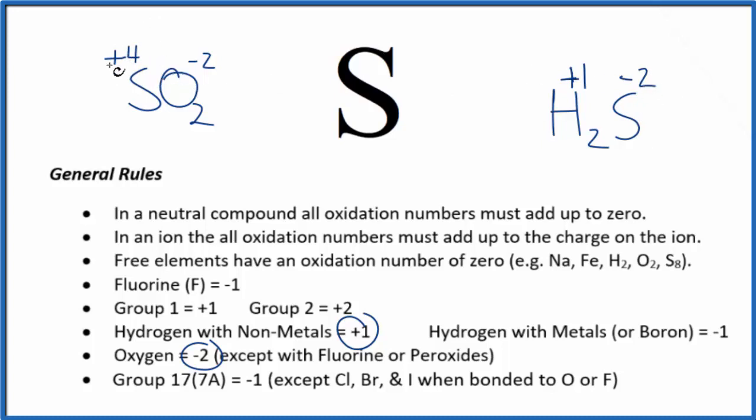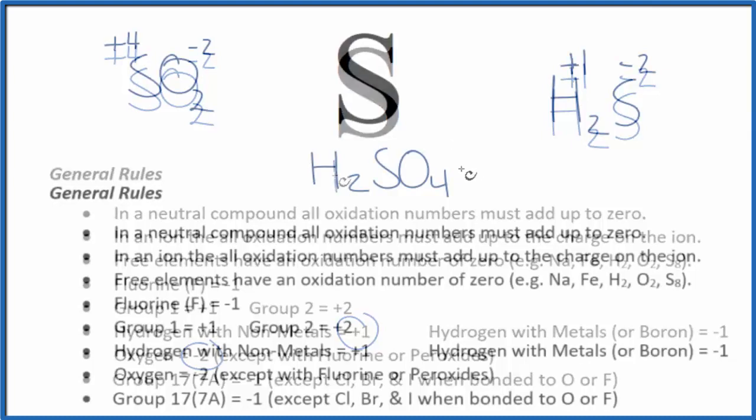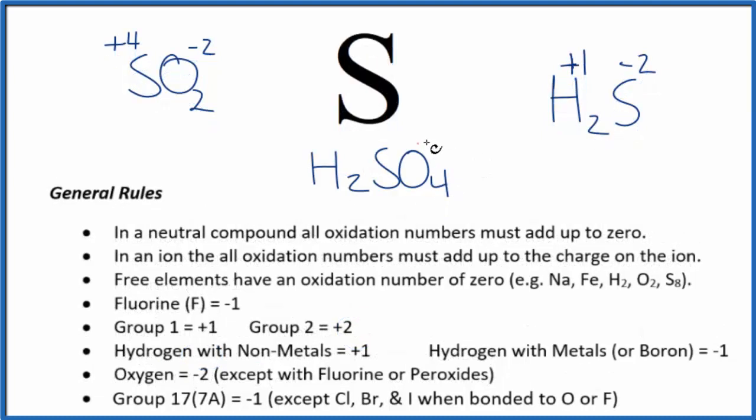Let's look at one more: H2SO4. For H2SO4, oxygen is minus two, hydrogen is plus one, and we don't know what sulfur is. We could call it X. I've got four times minus two, that's minus eight, plus two times plus one is plus two. That gives me negative six.